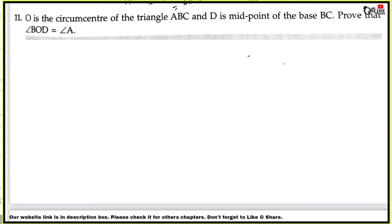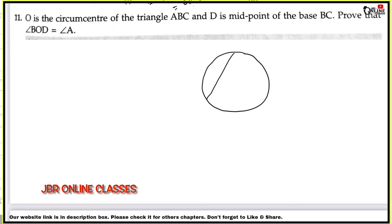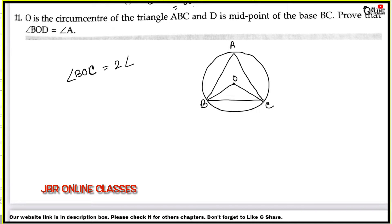For the previous problems, please check the description box — the link will be there. So here, number 11: O is the circumcenter of triangle ABC, D is the midpoint of base BC. Prove that angle BOD equals angle A. First I'm going to draw a circle. ABC is a triangle, O is the circumcenter. Now, angle BOC equals double of angle A because arc BC subtends angle BOC at the center and angle A on the remaining part of the circle.